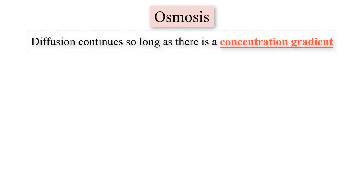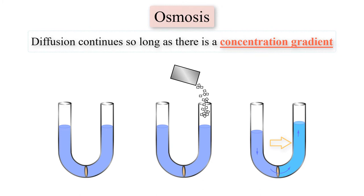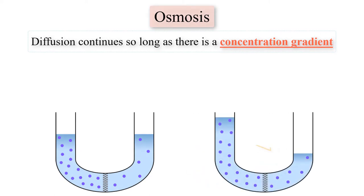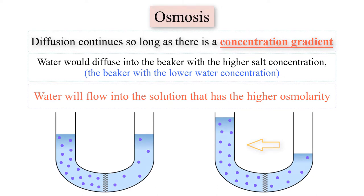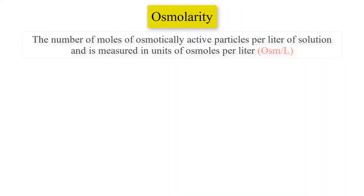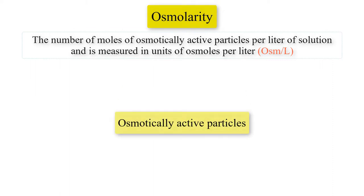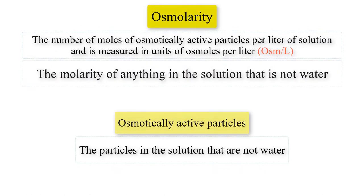What if the amount of salt in the salt water container were suddenly increased? Diffusion of water would increase from the pure water beaker into the salt water beaker. What if both beakers contain salt water solutions? Water would diffuse into the beaker with the higher salt concentration — meaning the beaker with the lower water concentration. A simpler way of stating this is that water will flow into the solution that has the higher osmolarity. Osmolarity is defined as the number of moles of osmotically active particles per liter of solution, measured in units of osmoles per liter.